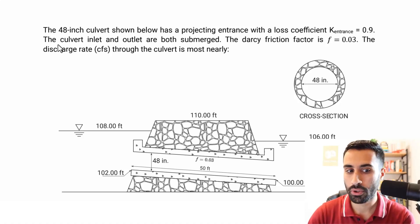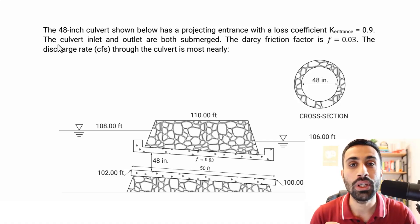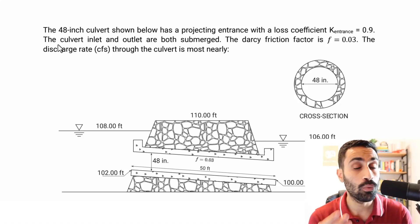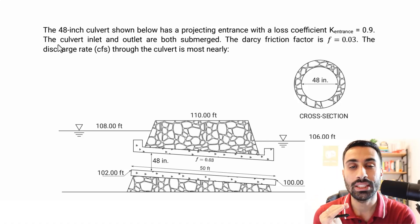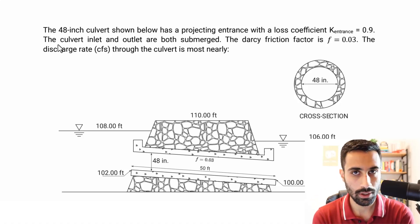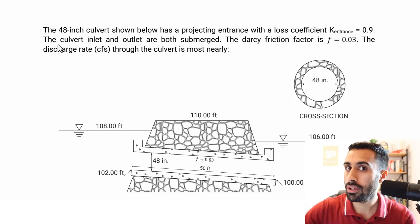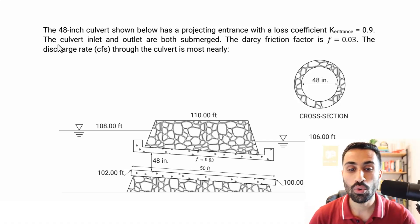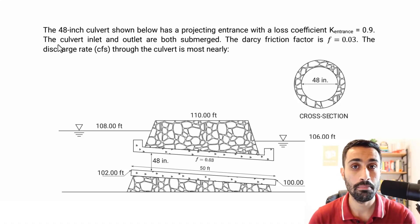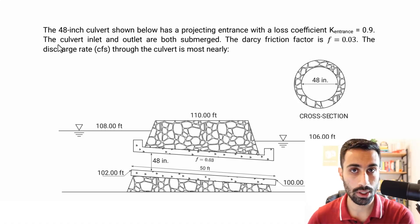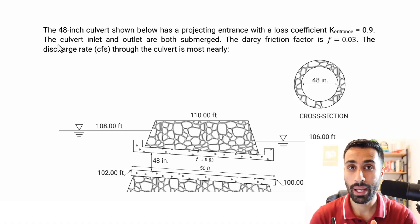Write down all your givens — the numbers, the variables. Write down what you need to find, what's the unknown, and what units we need at the end. Then proceed with a solution. Maybe you will apply a certain formula, a certain concept you already learned. I want you to use the FE handbook to arrive at the best solution possible. Pause the video and attempt this on your own.